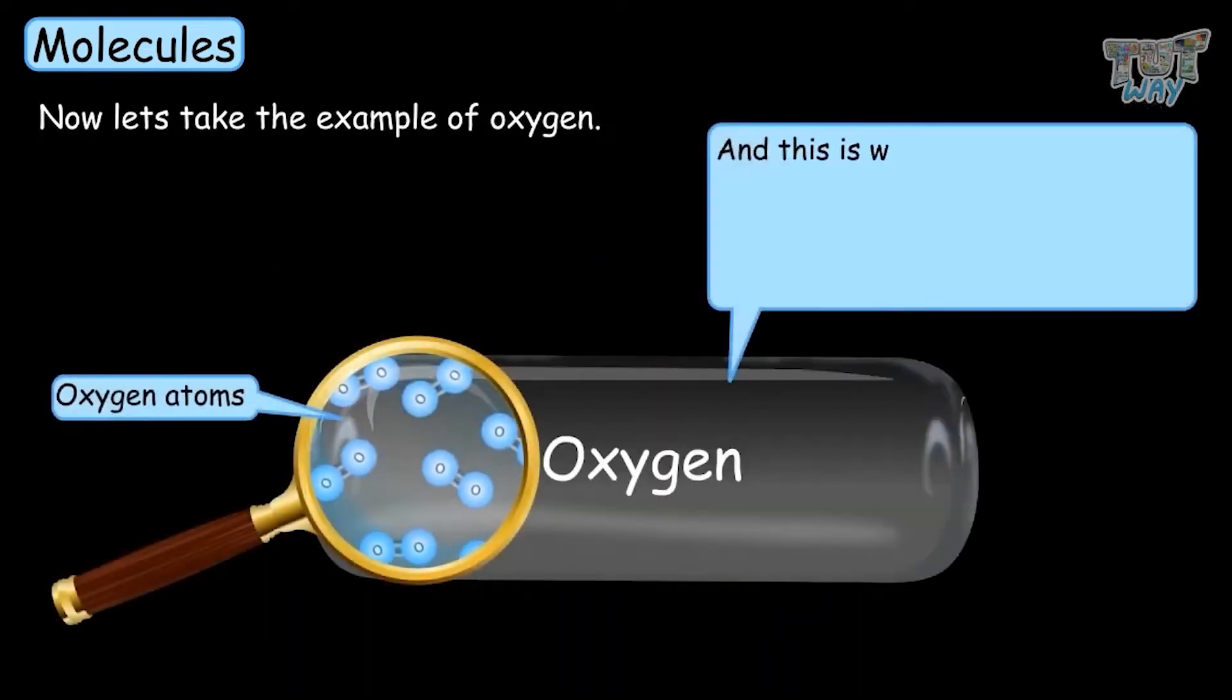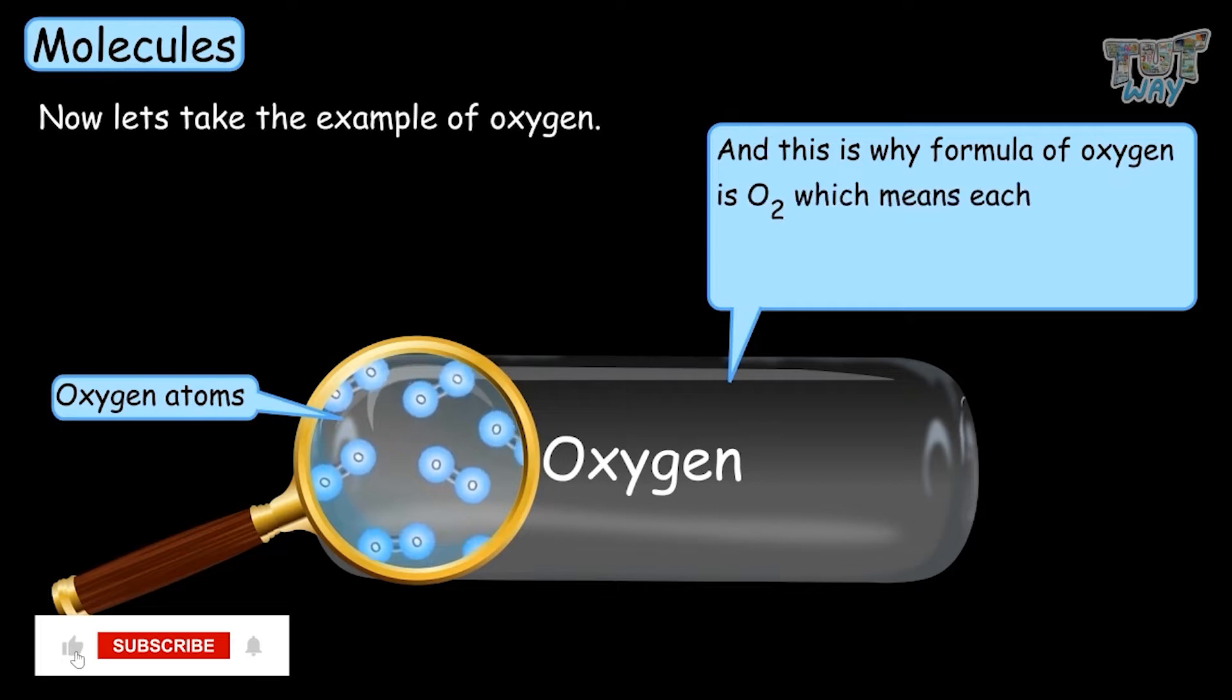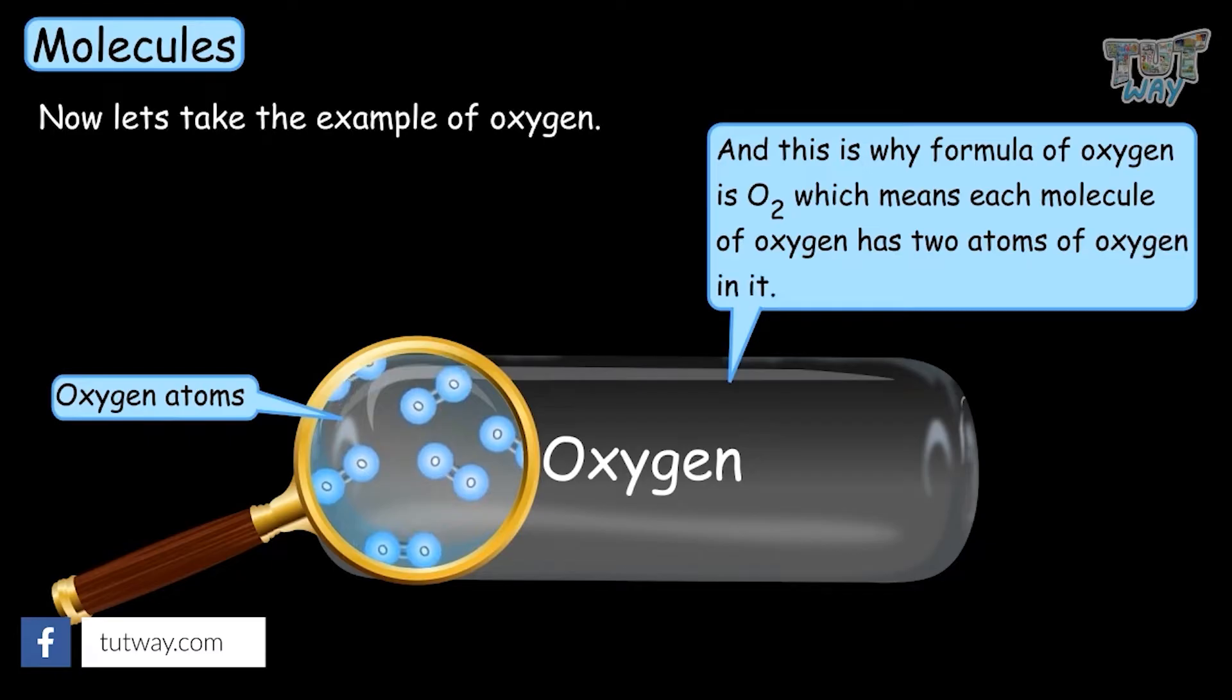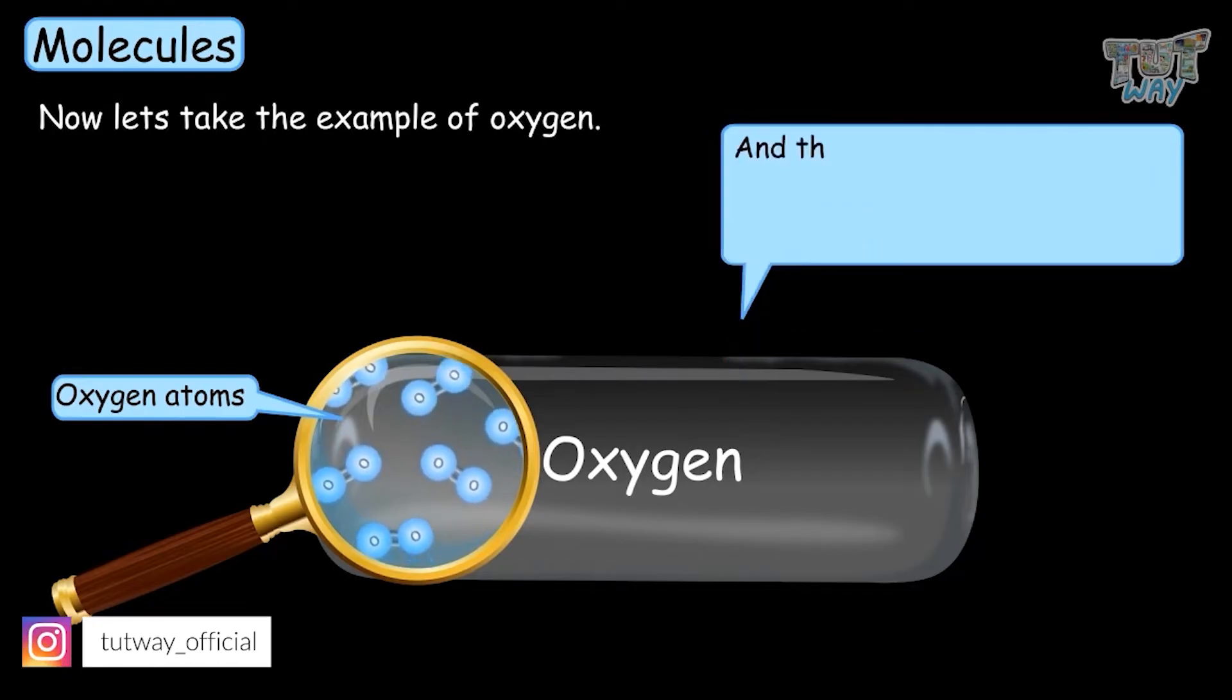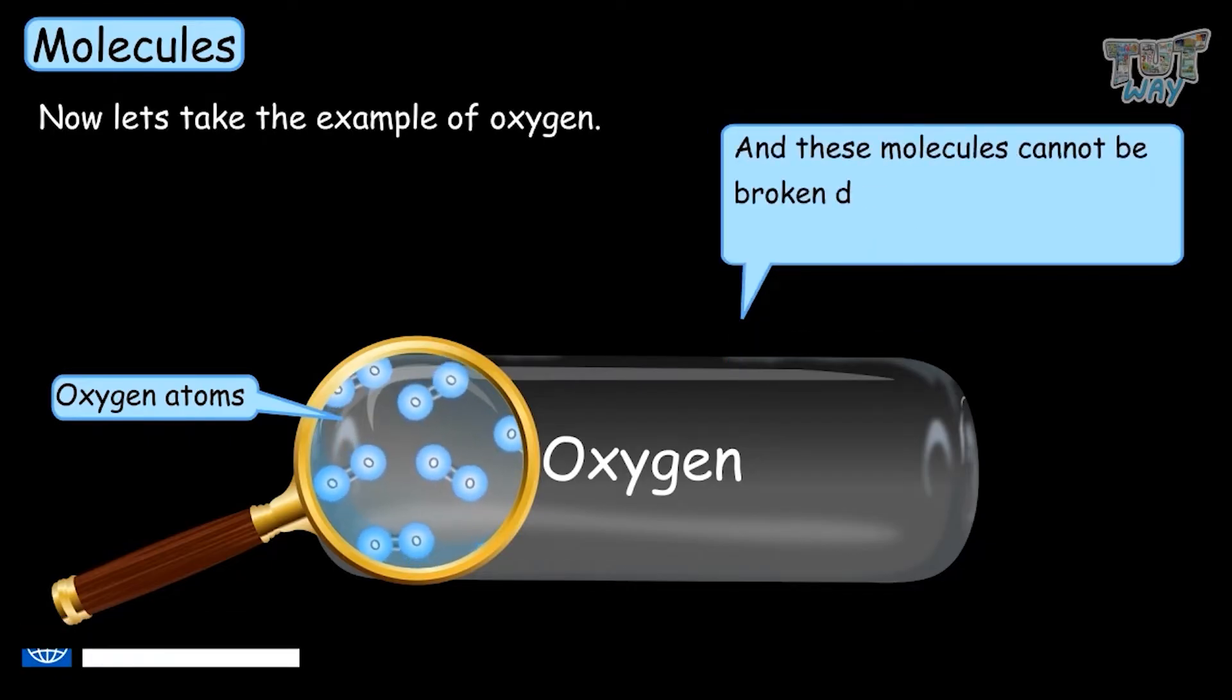And this is why the formula of oxygen is O2, which means each molecule of oxygen has two atoms of oxygen in it. And these molecules cannot be further broken down by ordinary chemical means.